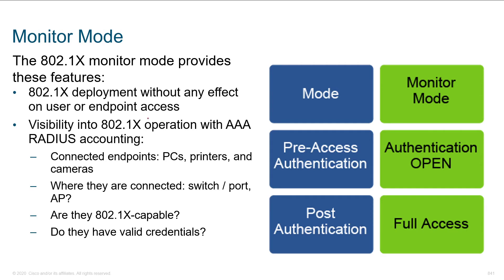Having visibility into the 802.1x operations shows us what's actually happening. We'll attach a laptop to a switch port, browse the internet, and if we fire up an 802.1x supplicant and send an EAP login request, the switch should process it and we'll see that through monitoring. Connected endpoints can be anything — PCs, printers, cameras, various IoT devices — connected physically to a switch or wirelessly through an access point. We want to know whether each device is sending EAP credentials, and if configured with valid credentials, they should be able to log into the network.